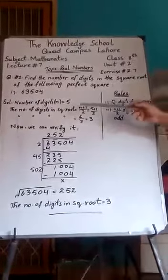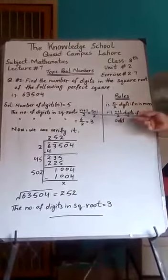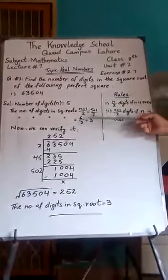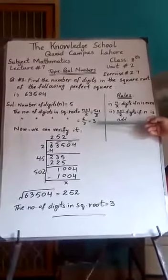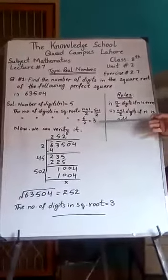Is question mein bhi woh hi lagayega. Number of digits in square root is equal to n plus 1 divided by 2. N hamari paas 5 a raha, 5 plus 1 divided by 2, 5 plus 1 is 6 by 2, isko two-part divide karke, we will get the answer 3.